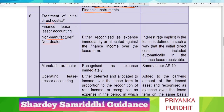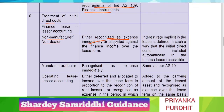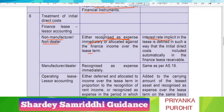Now let us look at the treatment of initial direct cost under a finance lease from the viewpoint of the lessor. When the lessor is a non-manufacturer or non-dealer, it will either recognize initial direct cost as an expense immediately or allocate it against the finance income over the lease term. However, in case of IndAS 116, the initial direct costs are adjusted in the interest rate implicit in the lease — that is, the IRR is adjusted so that the initial direct costs are treated as a cash flow and automatically adjusted.